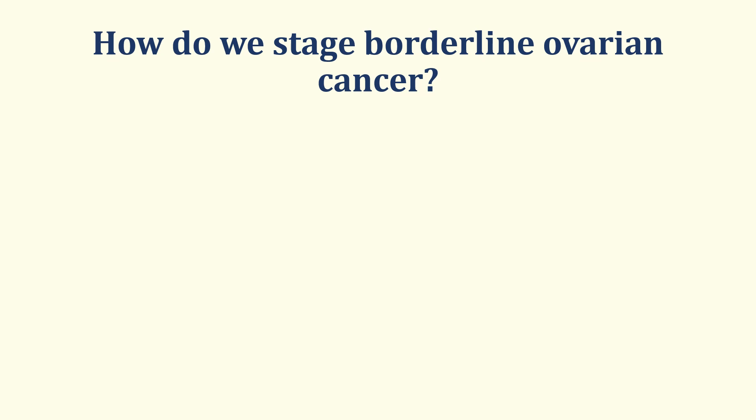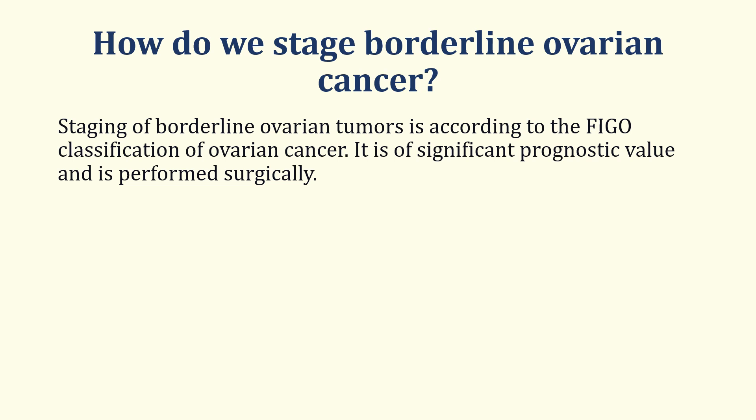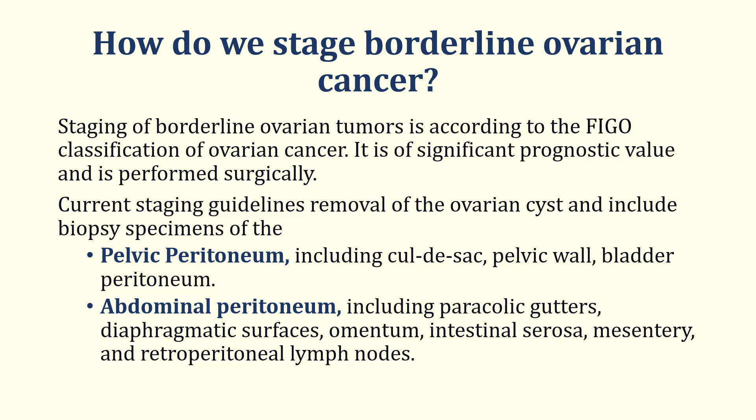How do we stage borderline ovarian cancer? Staging of borderline ovarian tumors is considered according to the FIGO classification of ovarian cancer. It is of significant prognostic value and is performed surgically. Current staging guidelines involve removal of the ovarian cyst and also include biopsy specimens of the pelvic peritoneum, including the cul-de-sac, pelvic wall, bladder peritoneum, abdominal peritoneum including paracolic gutters, diaphragmatic surfaces, omentum, intestinal serosa, mesentery, and retroperitoneal lymph nodes.